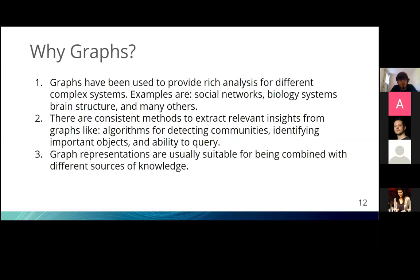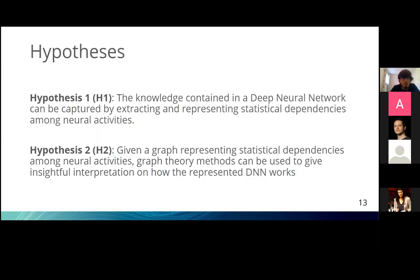Graph representations are also suitable for being combined with different sources of knowledge. For example, ImageNet is connected with the WordNet hierarchy, and we want a method that can make use of this knowledge. So we drew two hypotheses: first, that the knowledge in the DNN can be captured by extracting and representing statistical dependencies on neural activities; and second, that given such a graph, graph theory methods can give insightful interpretations on how the represented DNN works.